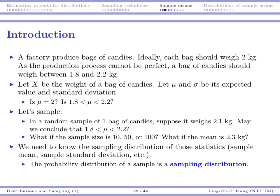Suppose I run a factory and I produce bags of candies. Ideally, each bag should weigh 2 kilograms. And because I know my production process probably is not perfect, there may be some fluctuation. In that case, I still hope that the process is somewhat under control, so hopefully a bag of candies should weigh between 1.8 and 2.2 kilograms. So I allow some fluctuation, but it should not be too serious.